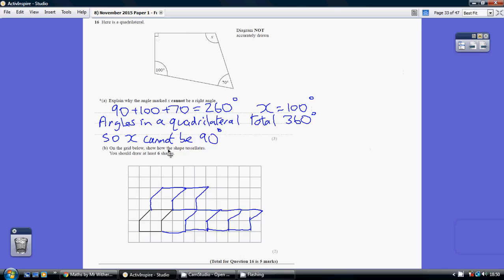Now part B, show how the shape tessellates. You should draw at least six shapes. Now tessellating is just when you fit shapes into shapes and you see there aren't any gaps being left. So that would be an example. Please use a ruler though, not like I have.